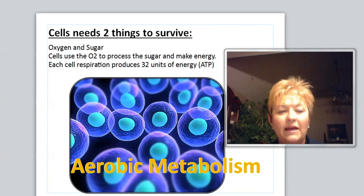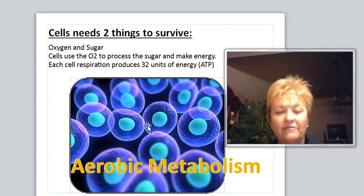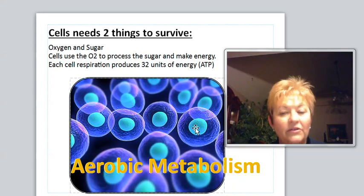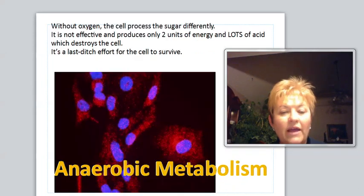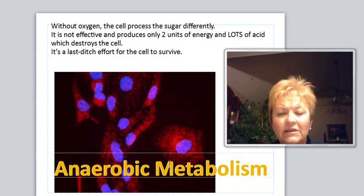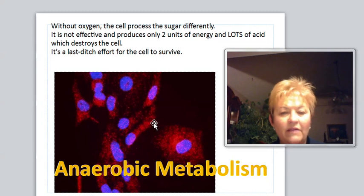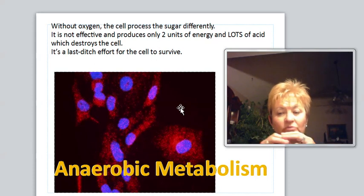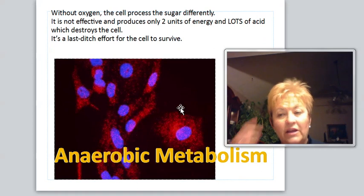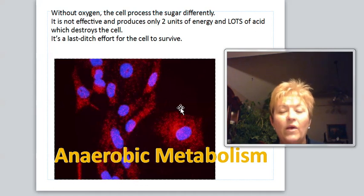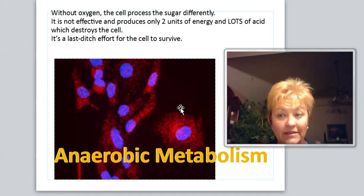If you look at the aerobic metabolism side, you can see cells have a nice cell wall — this is actually a real photograph — with lots of things inside and a healthy nucleus. When we go to anaerobic metabolism, the nucleus is still there but we no longer have a healthy cell wall. In fact, we really don't have a cell shape at all, and these cells are starting to deteriorate and die. So we have to understand that we've got to have oxygen to keep our cells alive. If we lose that oxygen, this is what's going to happen.